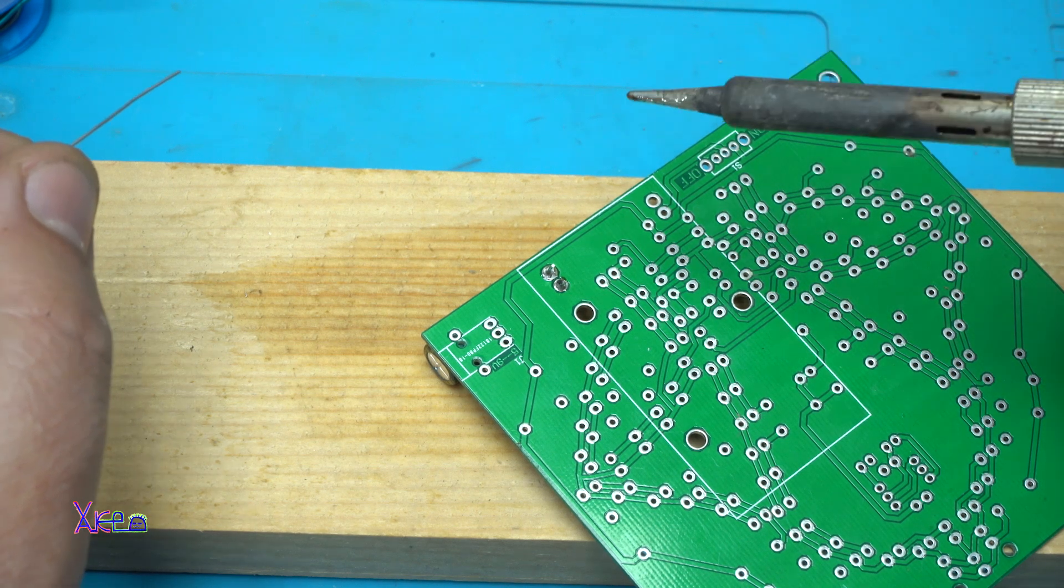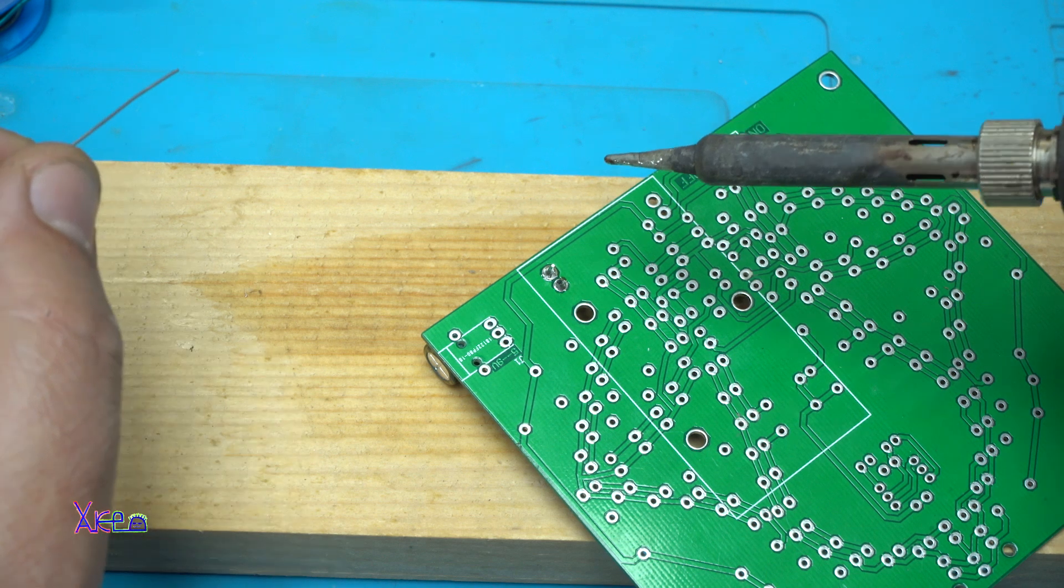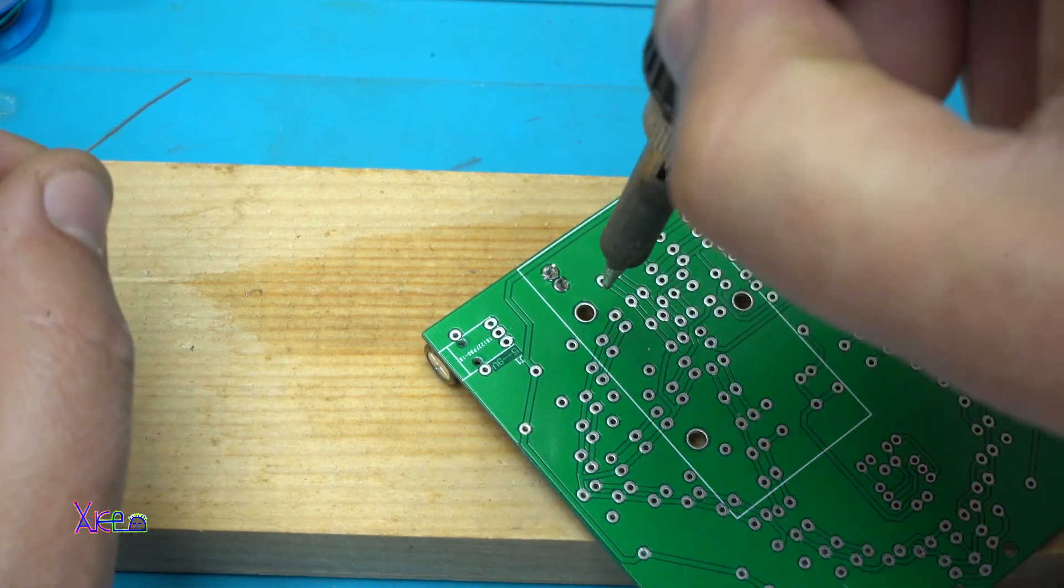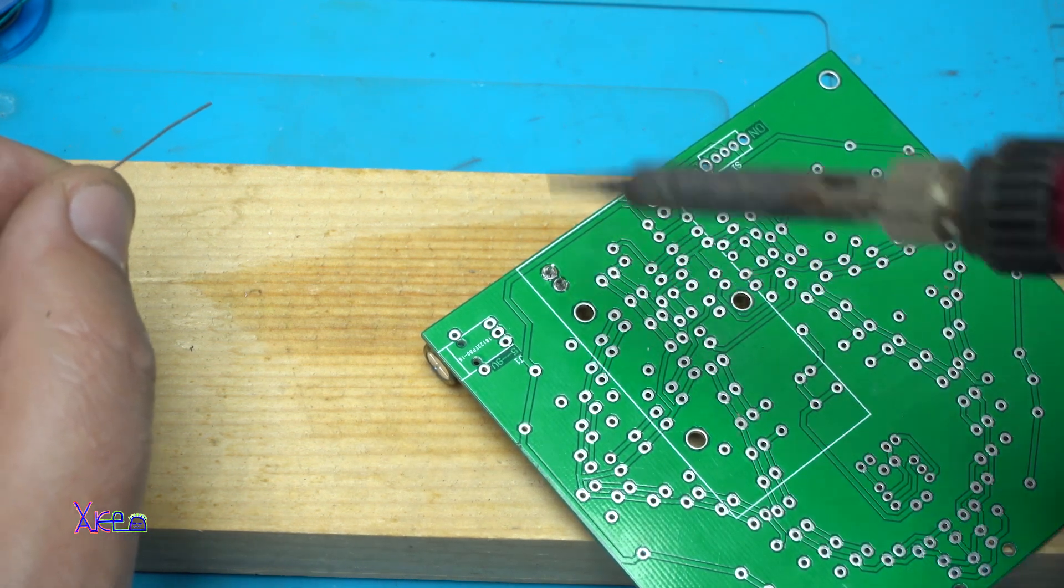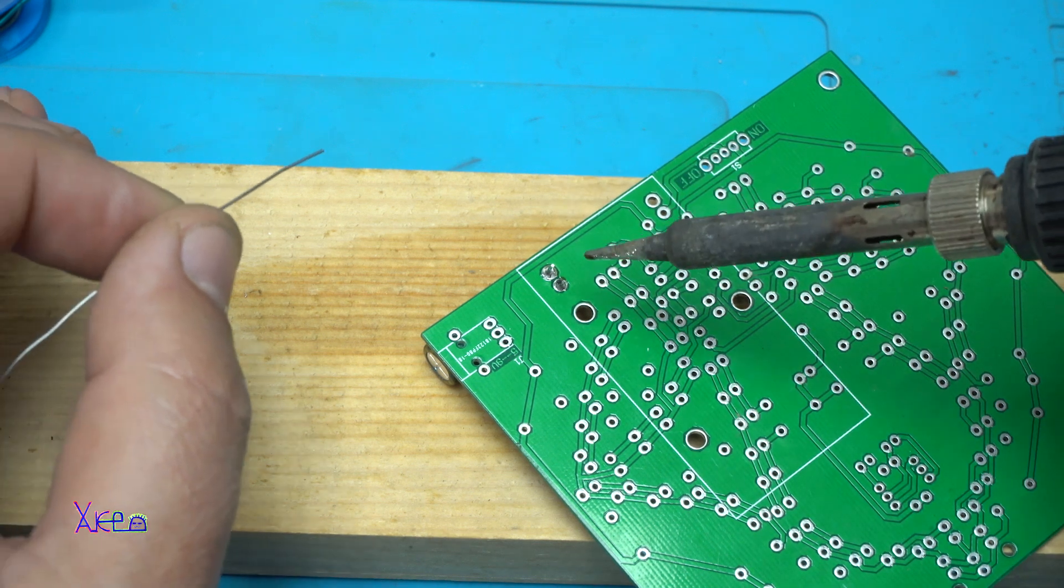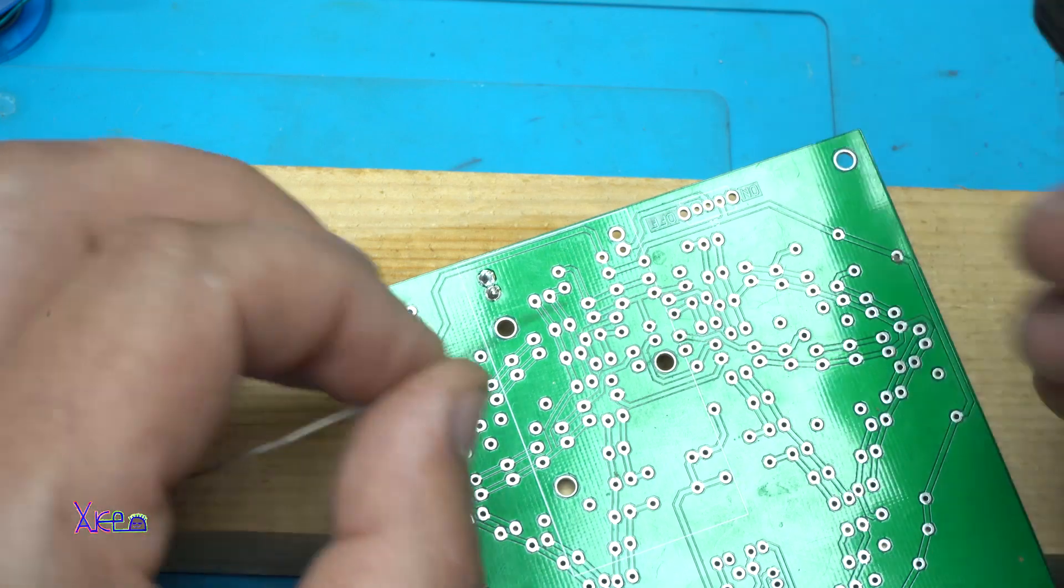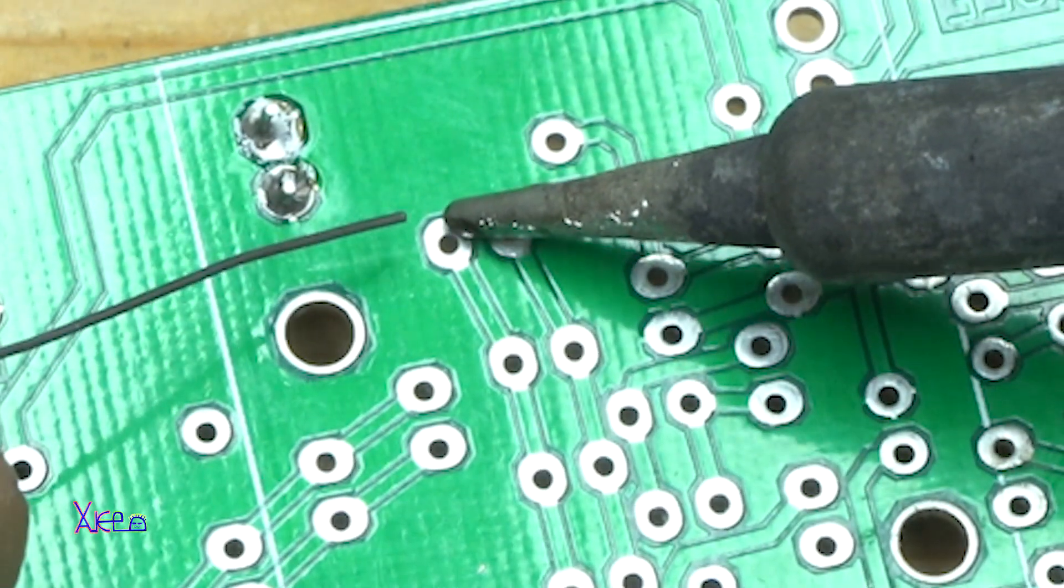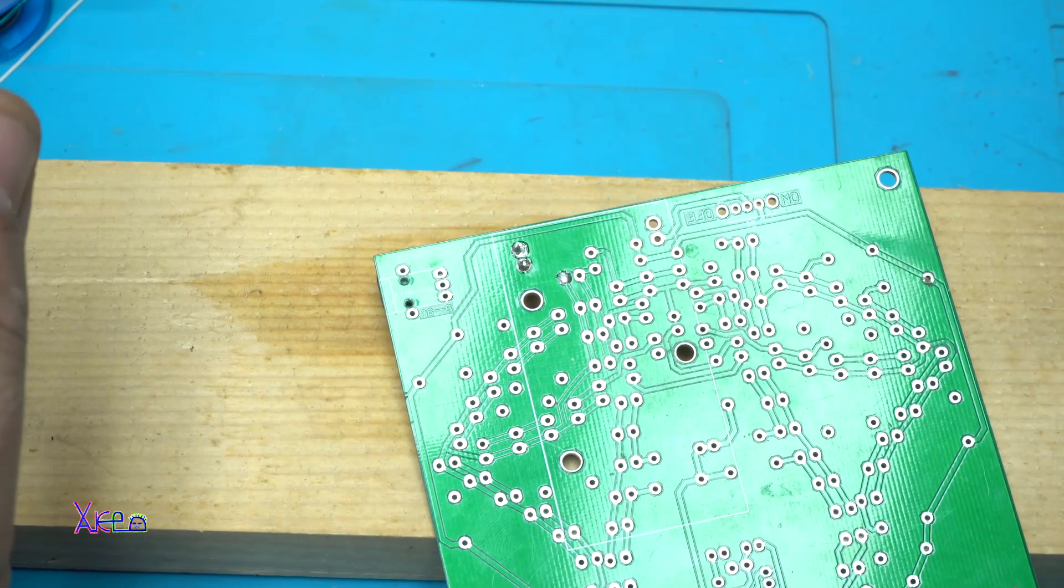And you need to hold the soldering iron at angle 45 degrees. Not like this from the top. Not lay down very much. But the angle need to be about 45 degrees. Look how it easy. Hit the soldering pad and add tin. Perfect.